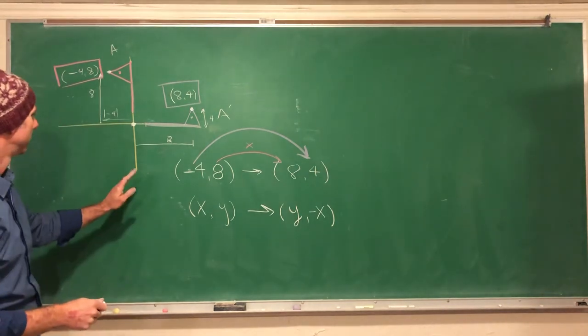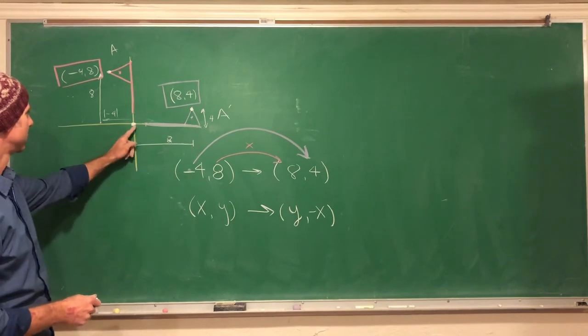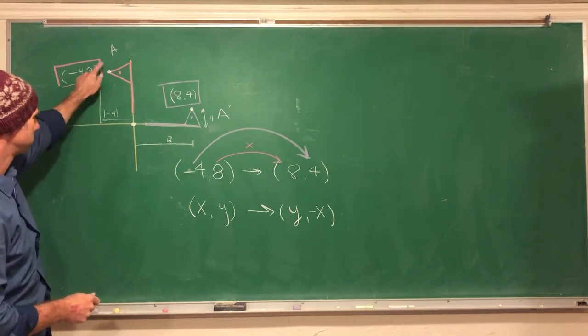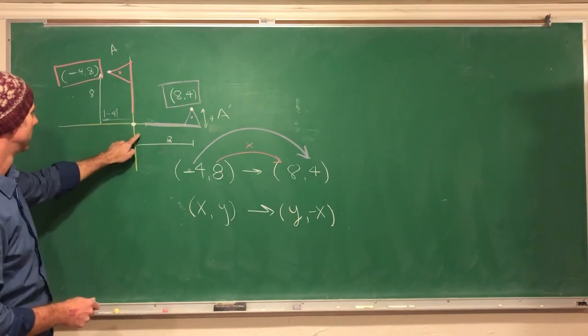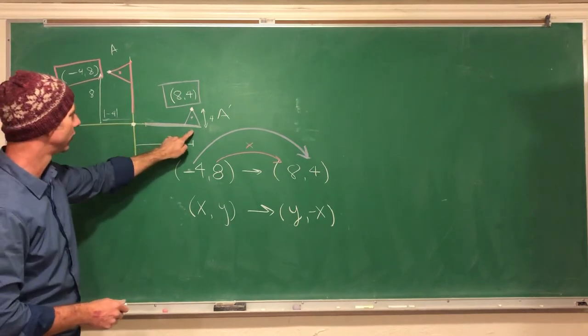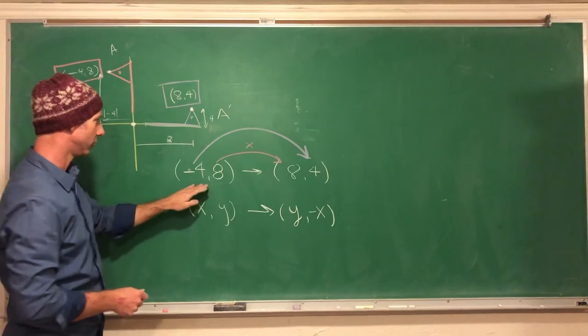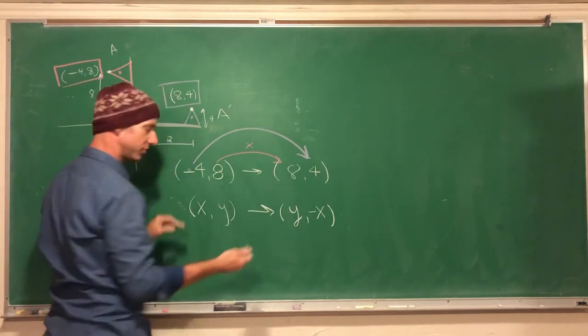Now let's check our work. Let's make sure these points make sense. Negative four, positive eight, that's reasonable. This one over here is going to be eight over, four up. That's reasonable.